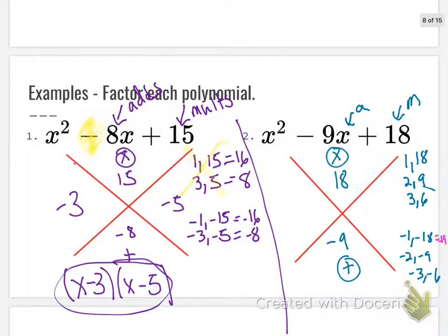The only one of these that add to the negative number that we need is the third one. We see here this would be negative 19. This would be negative 11, and that would be negative 9. So this would have to be negative 3. This would have to be negative 6.